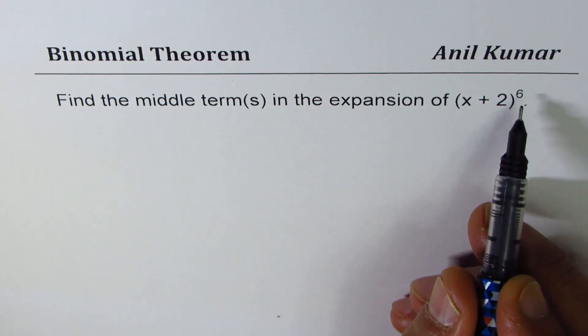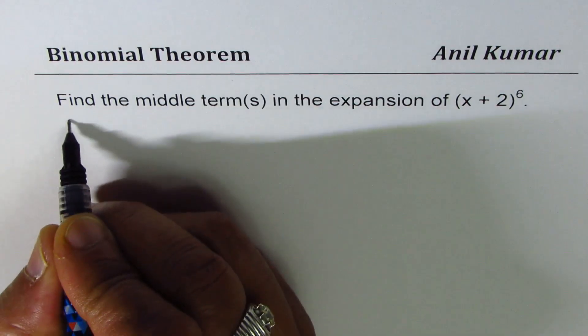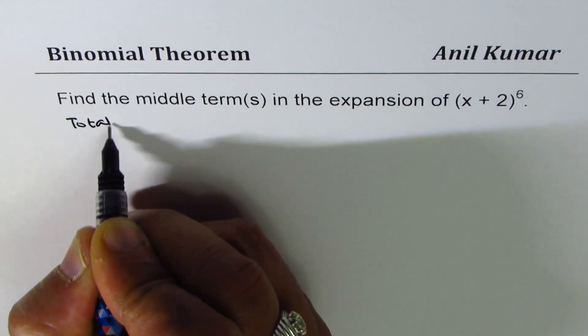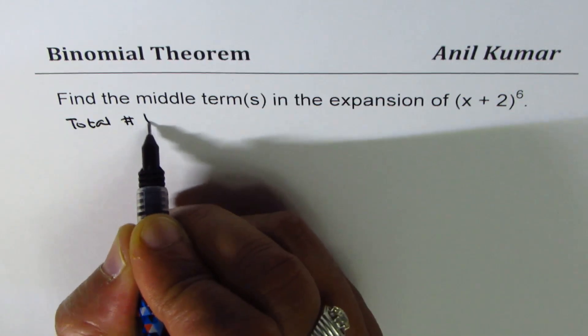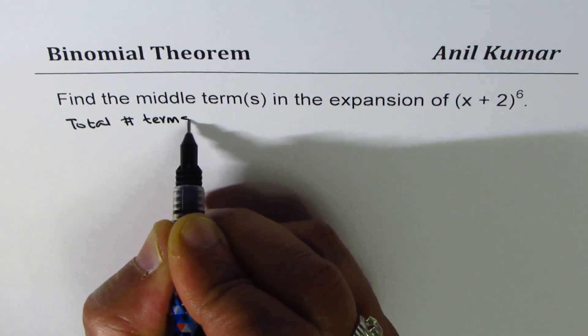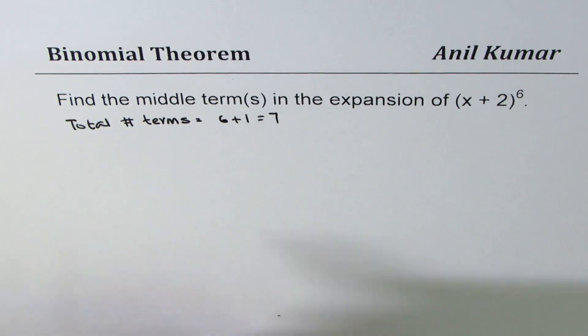Since the value of n is 6, total number of terms would be 6 plus 1, which is 7.